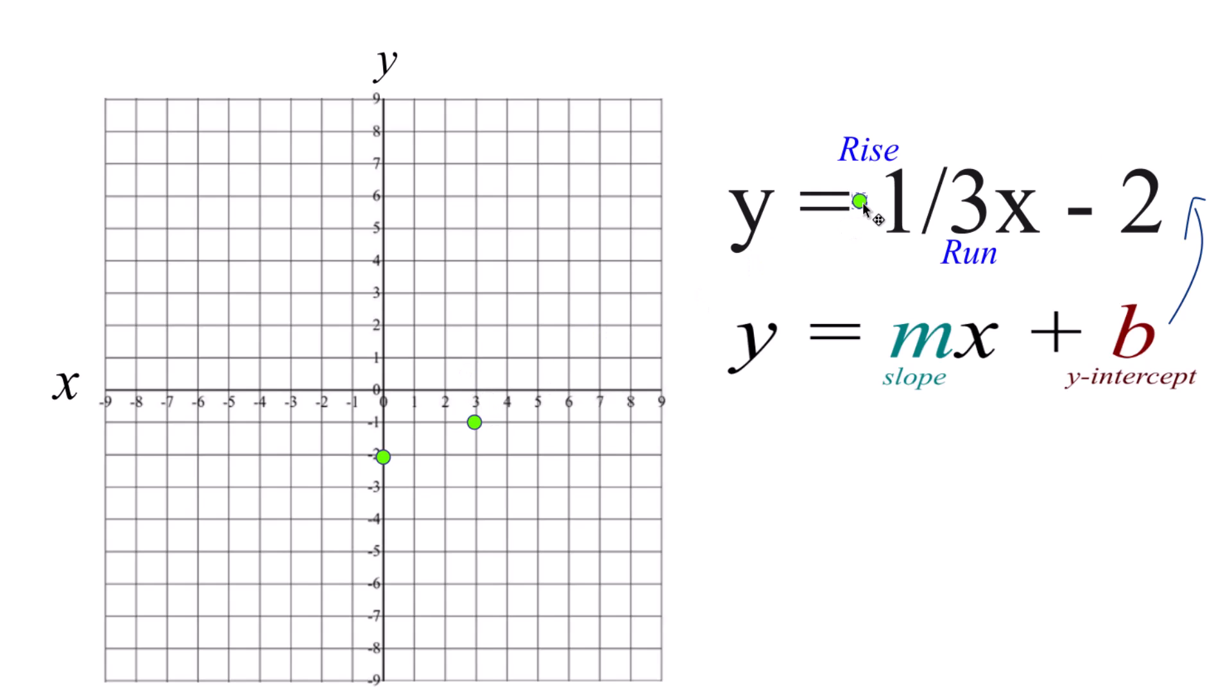Let's do another. Rise over run. Up 1. Run 1, 2, 3. And you can see, there's our line.